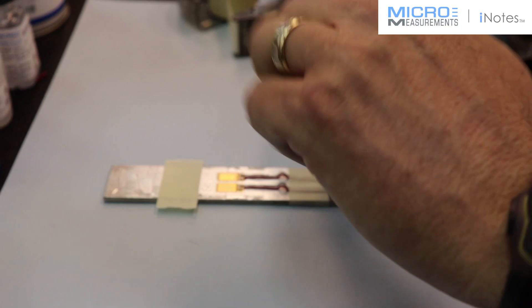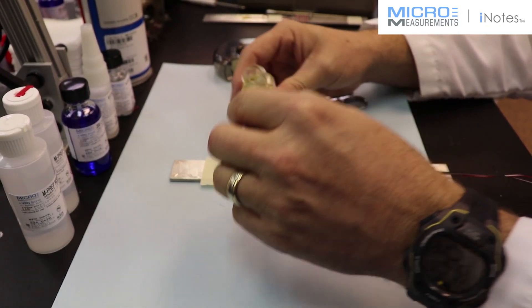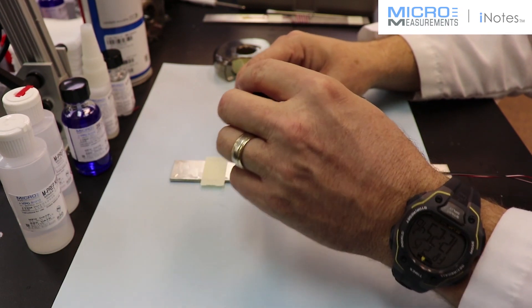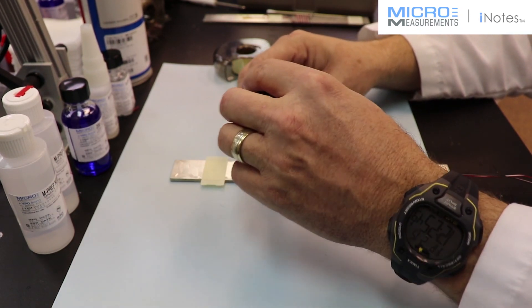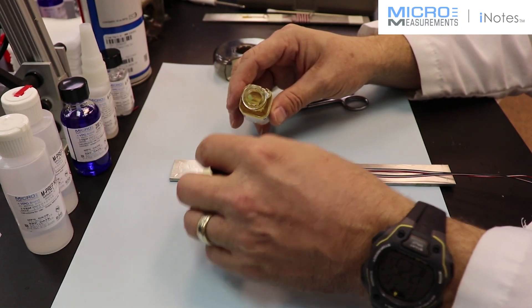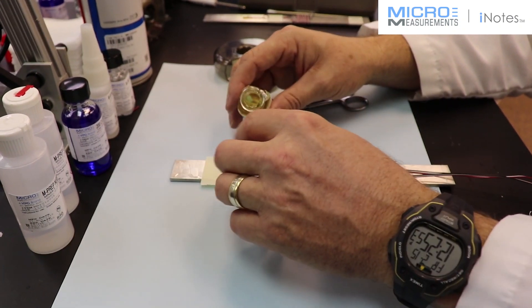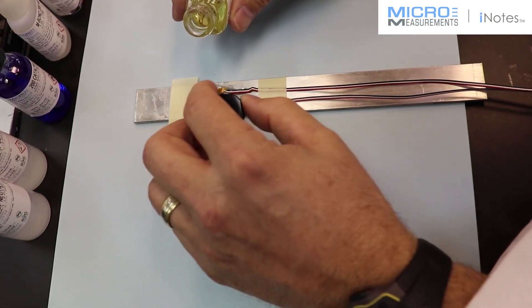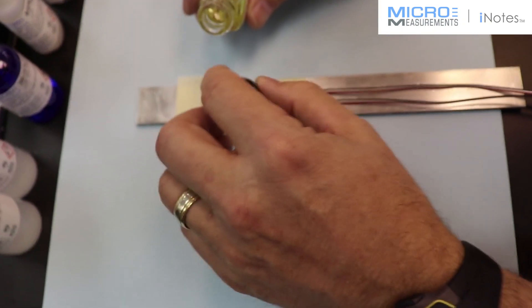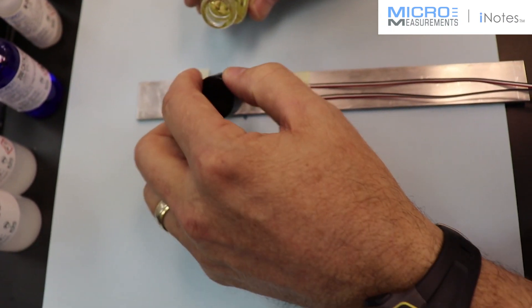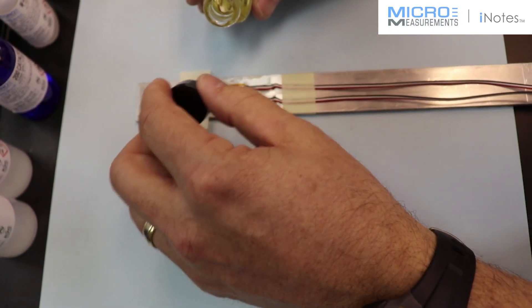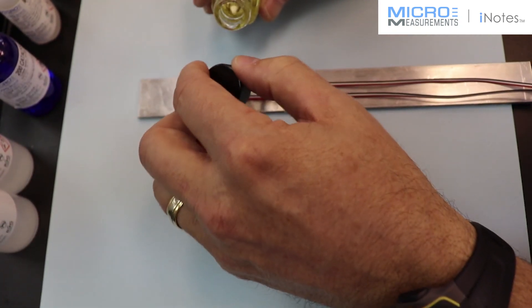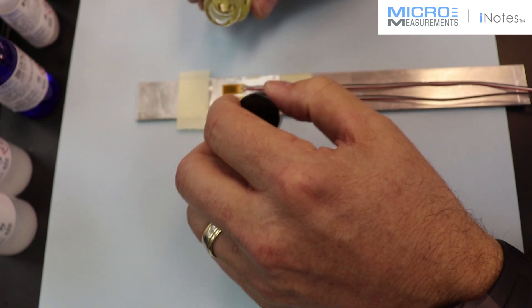And then you're going to take the M-Coat A, take the brush cap applicator out, and just start applying it. I normally start in and around the solder connections, and you just sort of mop it in place. You want a good thick coating. There's a lot of solvent in it, so as it dries, it'll shrink. But just take it and kind of brush it on over top of the gauges.